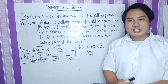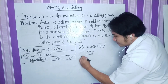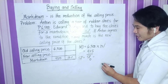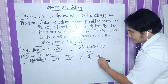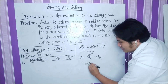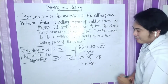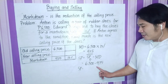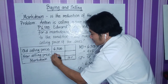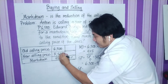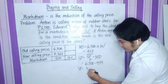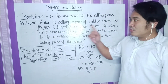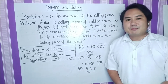If that is the markdown, how much is the selling price? For the selling price, you are just going to subtract the old selling price and the markdown. The old selling price is P6,500 and the markdown is P975. So, P6,500 minus P975 is equal to P5,525 pesos. This is the new selling price of the shoes with a 15% markdown.